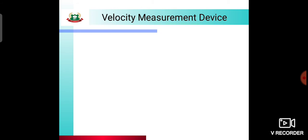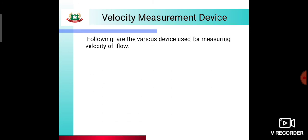The first topic of this video lecture is velocity measuring devices. For measuring the velocity of flow in open channels, the following devices are used: first, the current meter; second, the pitot tube; and third, floats. These three are the main devices used to measure the velocity of flow in open channels.